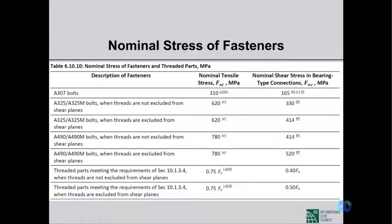The code provides nominal stress values for fasteners: Fnt for tension capacity and Fnv for shear capacity, multiplied by the bolt area. Whether threads are present at the shear plane affects the capacity. For example, an A325 bolt with threads not excluded from the shear plane has a nominal shear stress of 330 MPa; if there are no threads at the shear plane, it is 414 MPa.